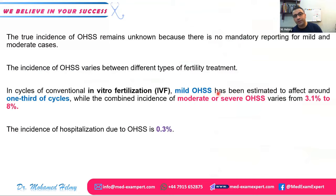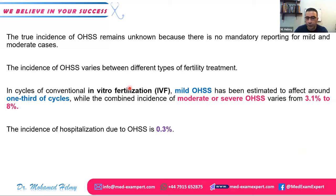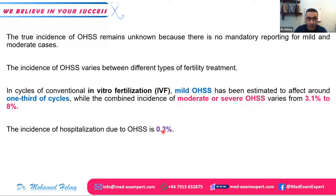The true incidence of OHSS is inaccurate because mild and moderate cases often go unreported; only severe and critical cases are mandatory to report. In conventional IVF cycles, mild OHSS affects about one-third of cycles and usually resolves spontaneously. The combined incidence of moderate to severe OHSS ranges from 3.1% to 8%, and hospitalization due to OHSS occurs in about 0.3% of cases.